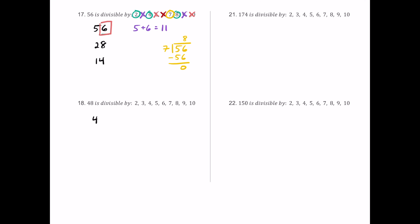For number 18, we have 48. It ends in an even number, so 2 works. Half is 24 — still even — so 4 works. Half of 24 is 12 — still even — so 8 works. The sum 4 plus 8 is 12, a multiple of 3 but not 9. The last digit is 8, not 5 or 0, so 5 and 10 fail. Since 2 and 3 both work, 6 works. Dividing 48 by 7 gives a remainder of 6, so 7 fails.